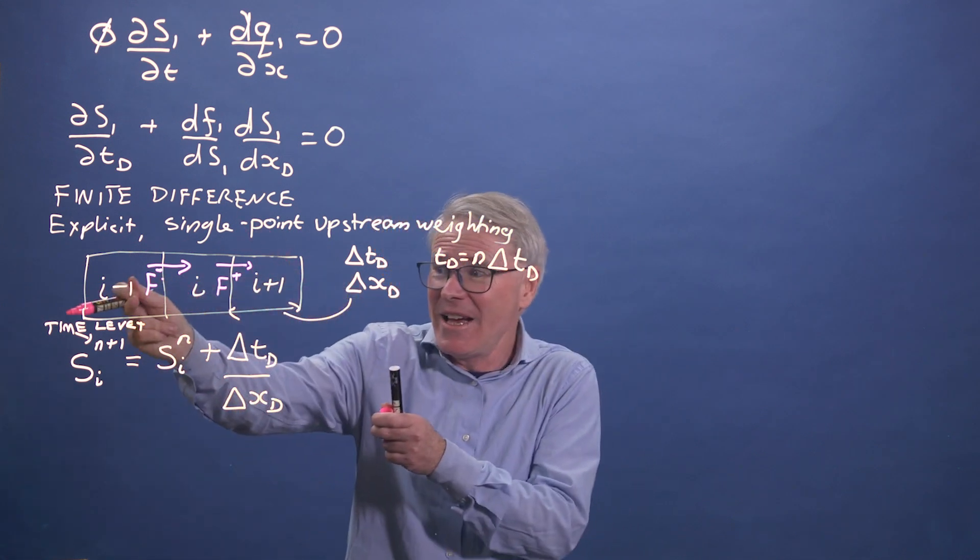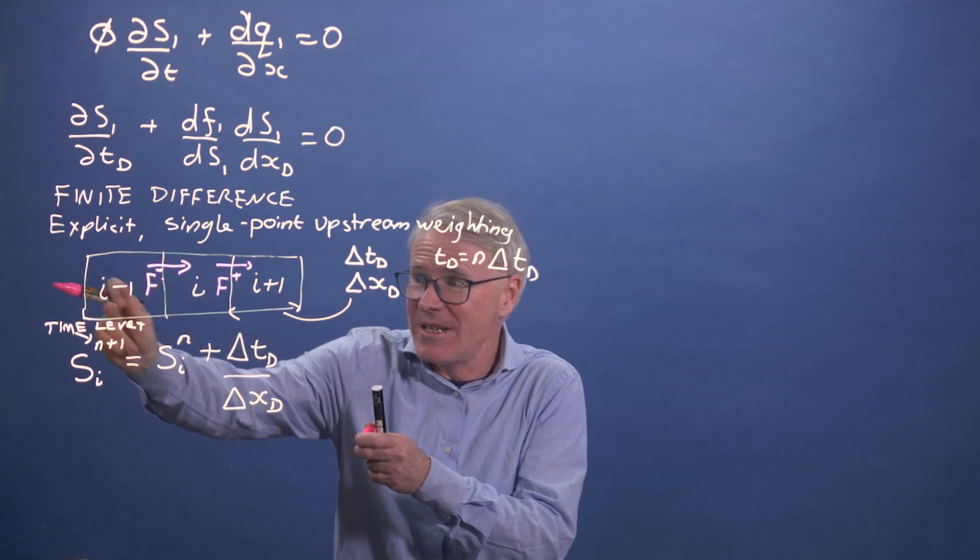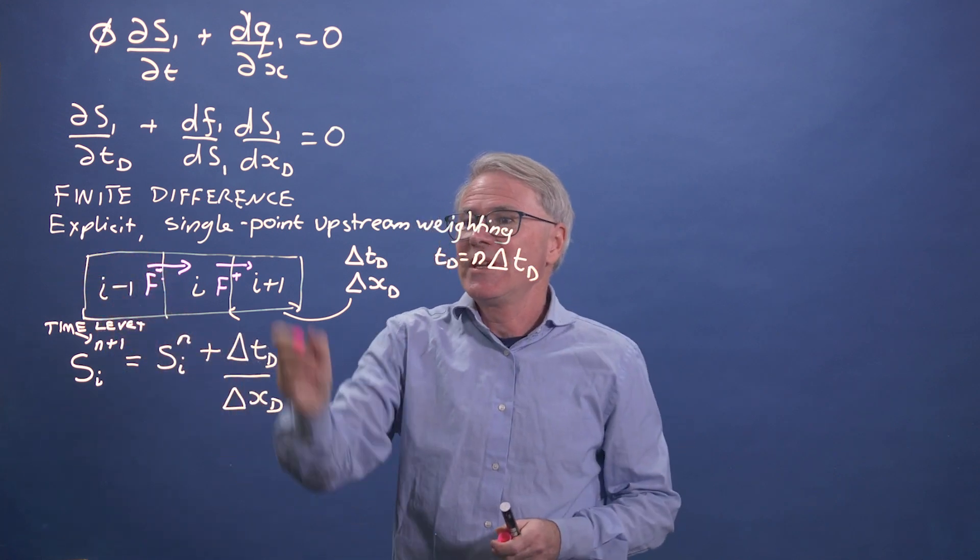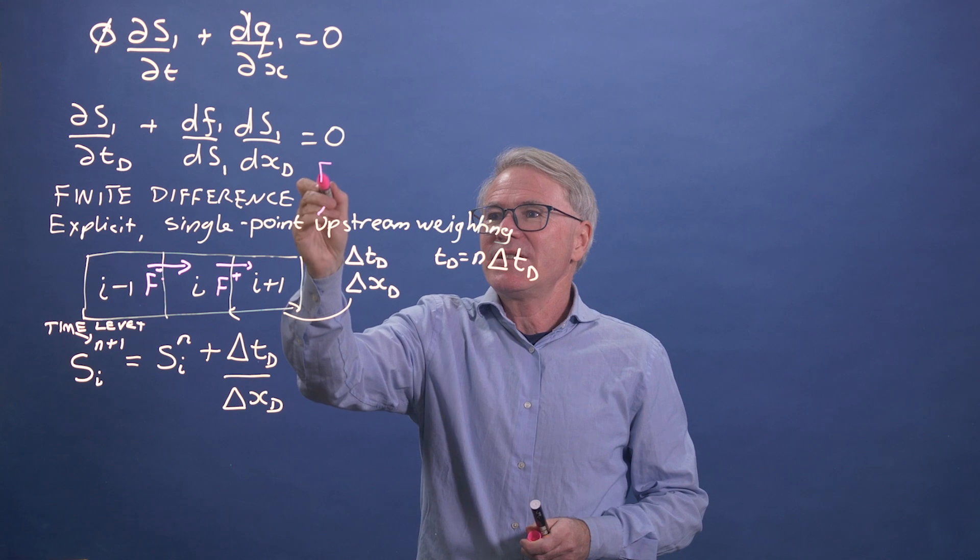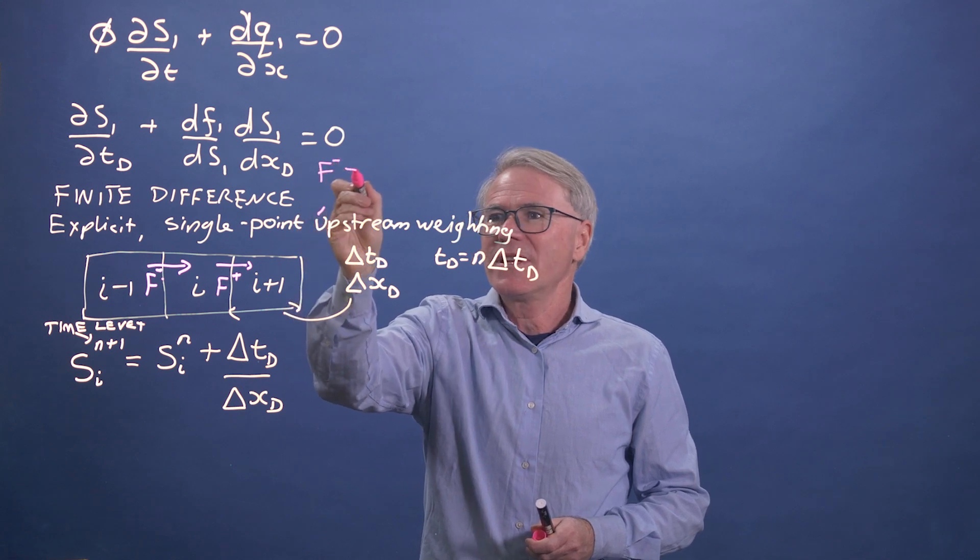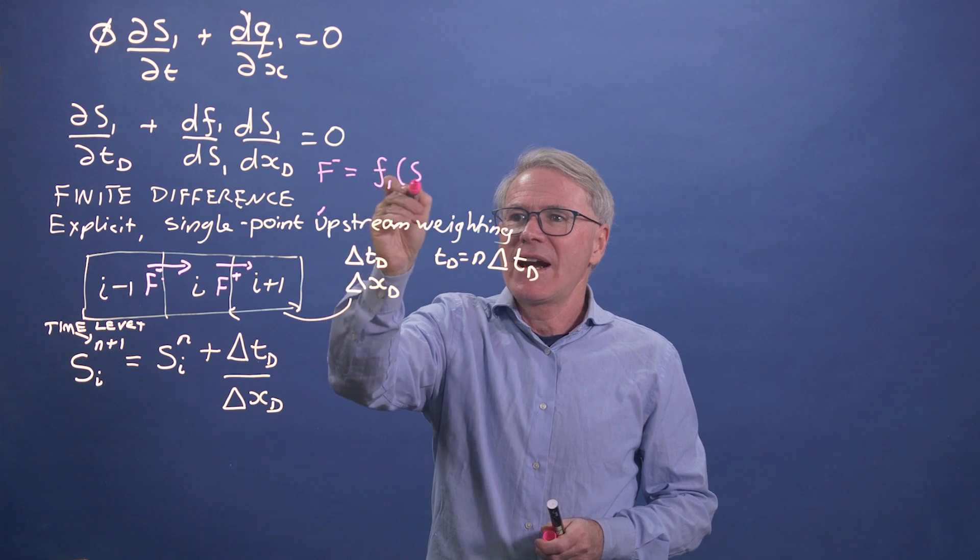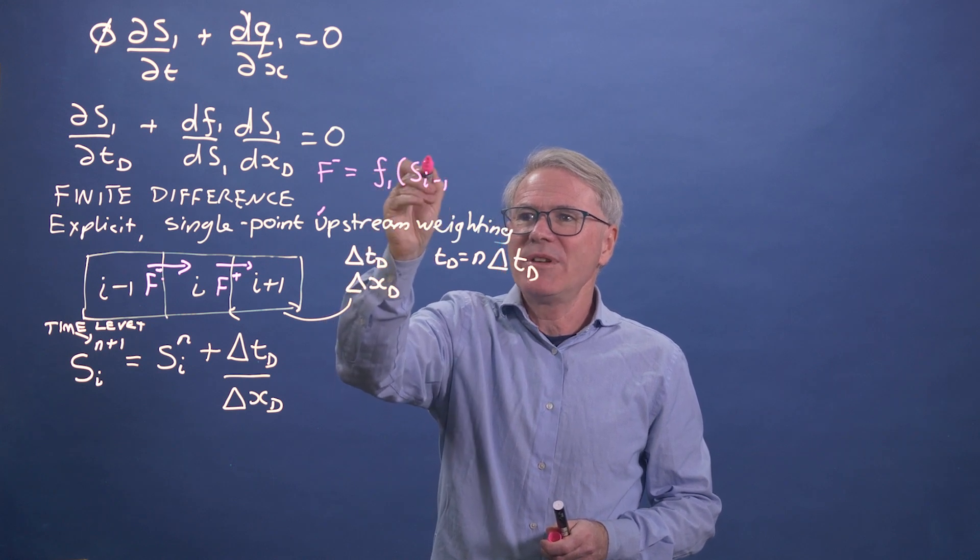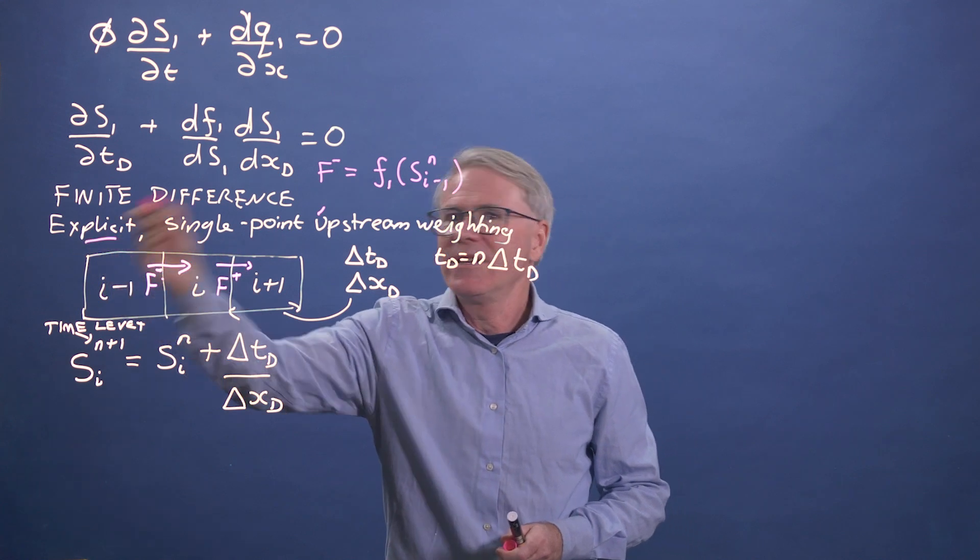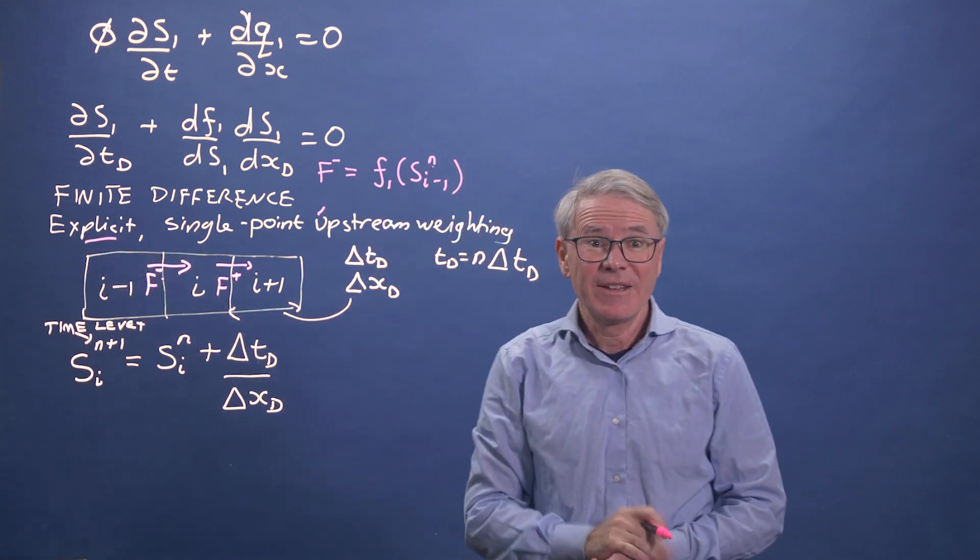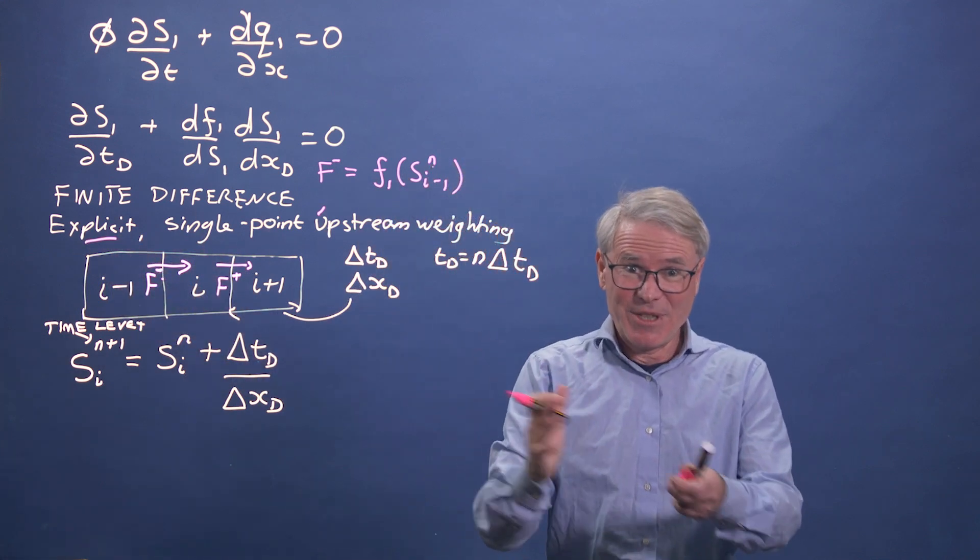And it makes sort of physical sense. You know, the water's coming from here. So the flux should be associated with this saturation. So upstream weighting says that f minus is actually evaluated the fractional flow at the upstream grid block. And it's explicit, which means we're using the previous time step.